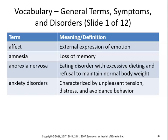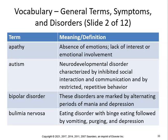Affect is the external expression of emotion — make sure you know the difference between affect and effect. Effect refers to how effective something is, like a drug. Affect is somebody's expression of emotion, such as having a flat affect. Amnesia is loss of memory. Anorexia nervosa is an eating disorder with excessive dieting and refusal to maintain normal body weight. Anxiety disorders are characterized by unpleasant tension, distress, and avoidance behavior. Apathy is the absence of emotions and lack of interest — unlike empathy, which means having emotions toward somebody. As a healthcare provider, you want to be empathetic, not apathetic.